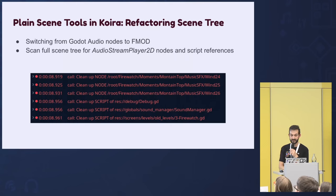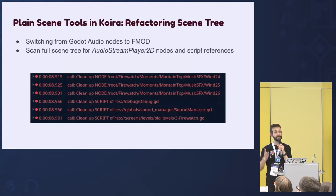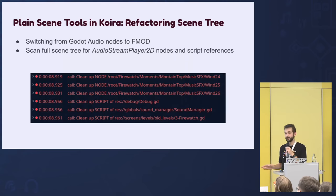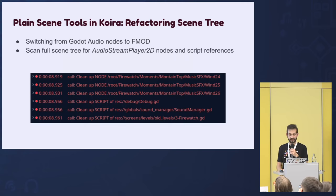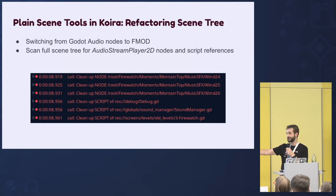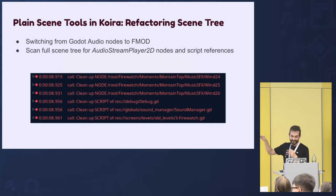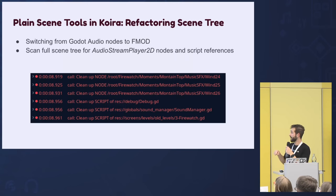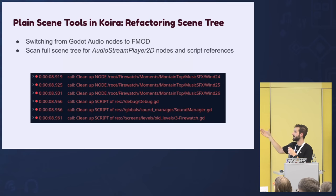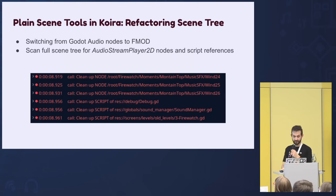Another tool we created was for refactoring. At some point we wanted to use FMOD, but our whole game was full of Godot audio nodes — AudioStreamPlayer and similar. Finding these scene by scene is not easy, so I wrote a little script that at the start of a level would scan the whole scene tree, look at all the nodes, and flag AudioStream2D nodes as needing refactoring. It also scanned all the scripts on those nodes. This is very powerful — it gives you a live list of everything that needs refactoring in the scenes you're using, so you never refactor zombie code sitting somewhere unused.